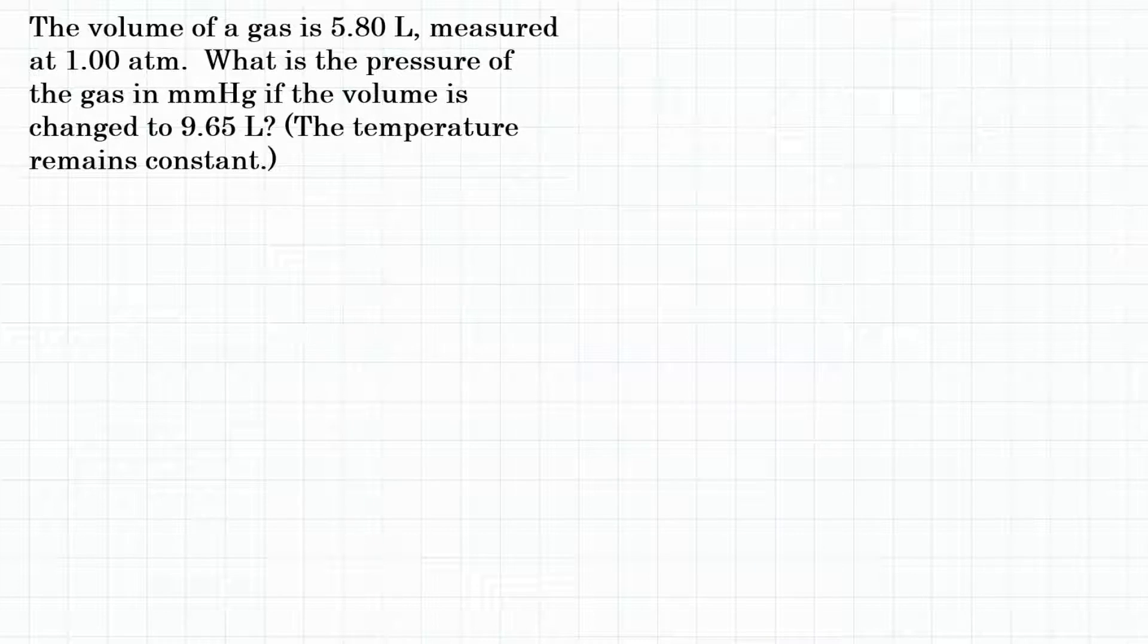Alright everyone, the problem says the volume of a gas is 5.80 liters measured at 1.00 atmospheres. What is the pressure of the gas in millimeters of mercury if the volume is changed to 9.65 liters? And in parentheses, it says the temperature remains constant.